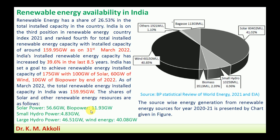Small hydropower — local generation rather than large capacity — accounts for 4.83 gigawatt. Large hydropower is 46.51 gigawatt, making it the second largest renewable energy source. Wind energy is about 40.08 gigawatt. Some other sources also contribute, but their share is very small and not mentioned here. These contributions can also be seen in the pie chart.